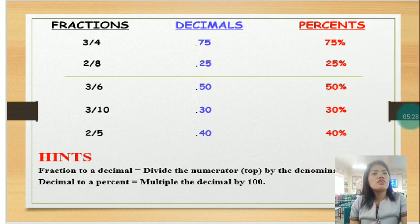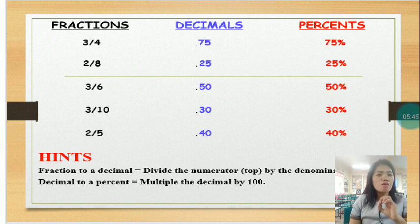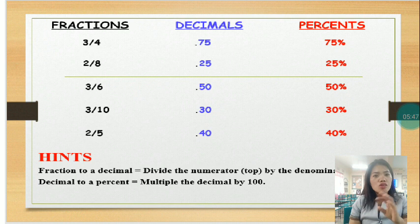For fractions 2 over 8, the decimals is 0.25, and the percent equivalent is 25%. Just following the procedure on how to convert from fraction to decimal and to percent.